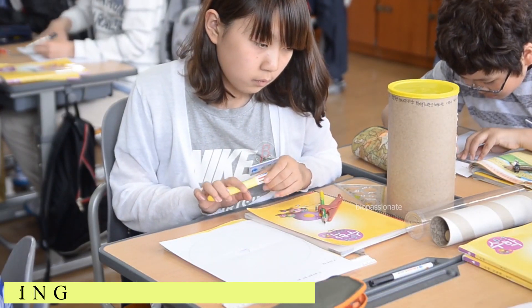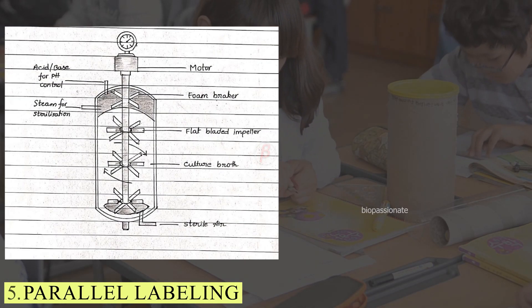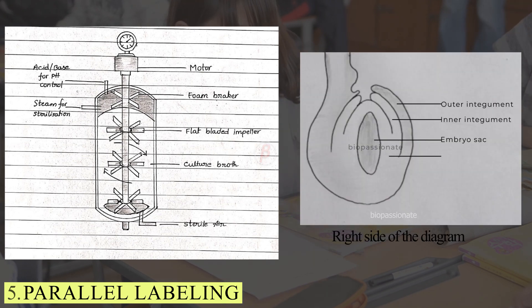Use a ruler to label the parts. Do not overlap the labels. Try to label on either side of the diagram. If it is overlapping, this is called parallel labeling.